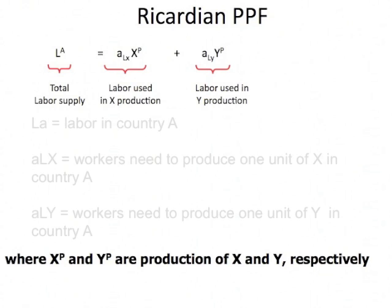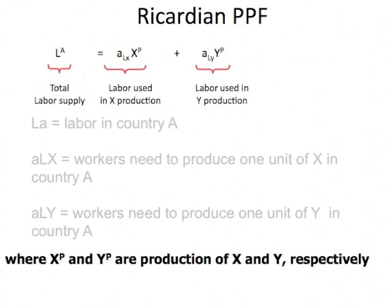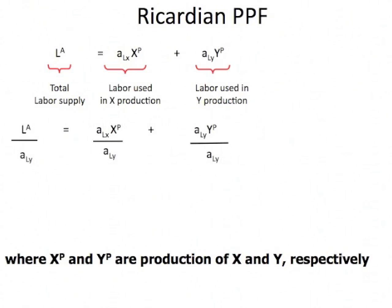Let's take a look at a representation of this. Total labor supply is given by LA, which equals the total amount of labor used in the production of X plus the total amount of labor used in the production of Y. If all labor is used in one or the other industry, the sum of those equals the total amount of labor — that is to say, you have full employment. We'll rearrange this equation, dividing everything by ALY, the unit labor coefficient for good Y. ALY cancels on the right, and what we're left with is the full employment condition, which can be interpreted as the equation for the production possibility frontier, because it gives the tradeoffs between the production of X and the production of Y when all labor is used.